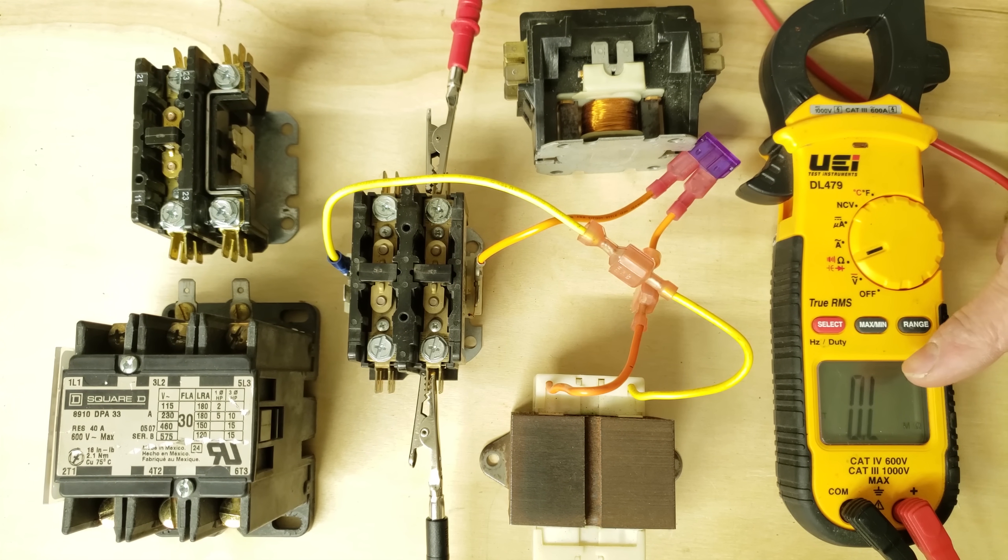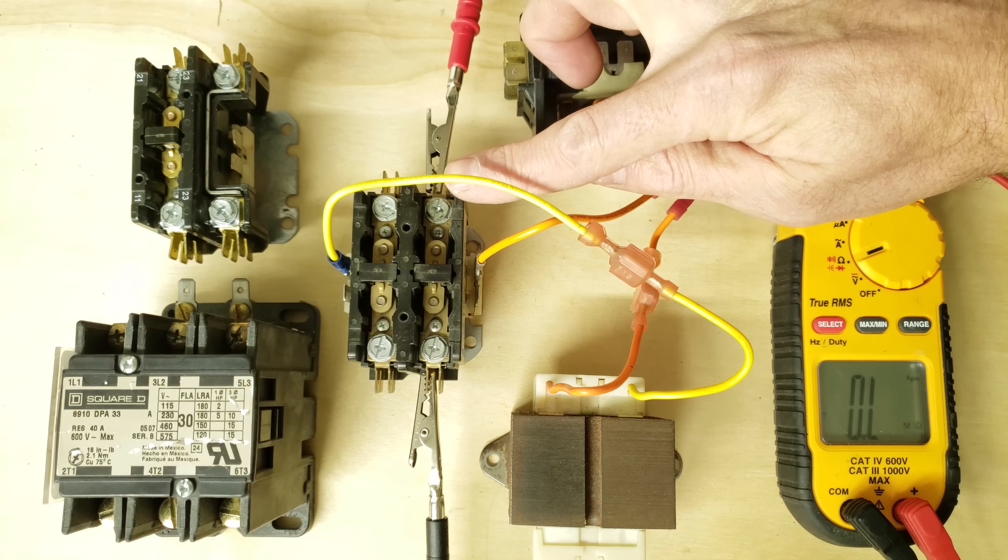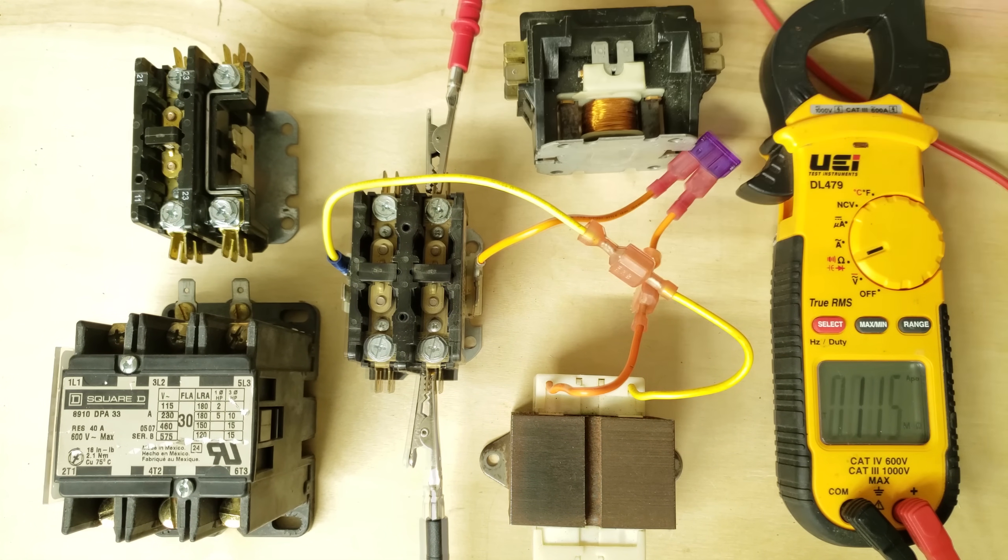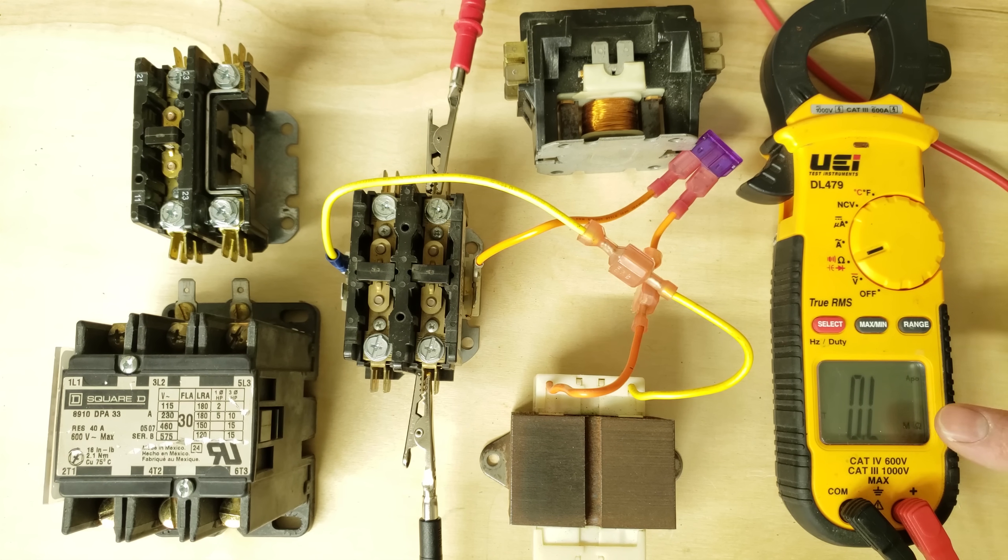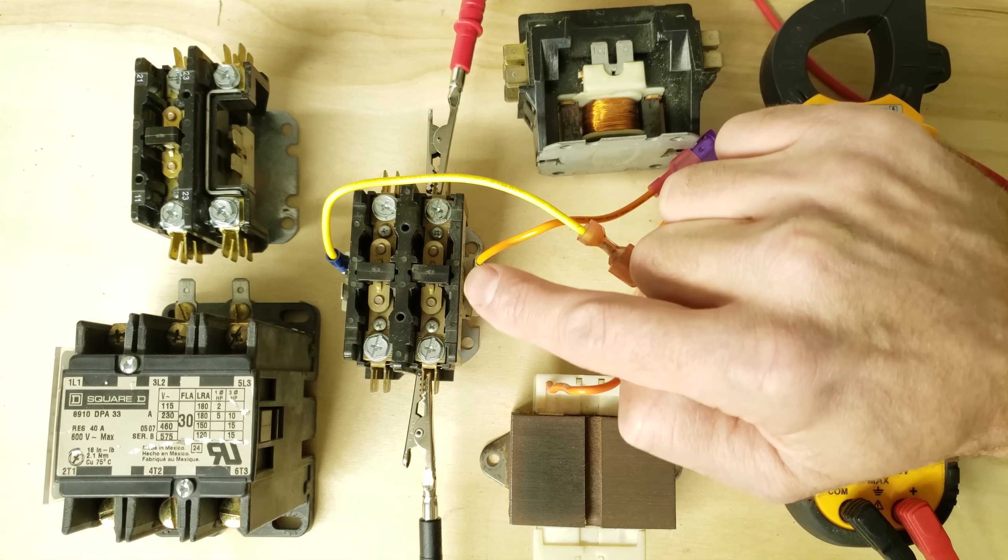We have our multimeter set on resistance and we're going to go ahead and power our 24 volt transformer and then you'll see that these contacts are going to close. So presently we're reading OL from our one probe to our other probe for the electrical contacts across here.